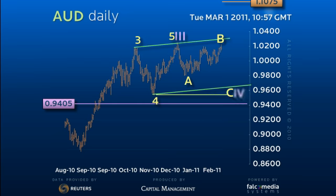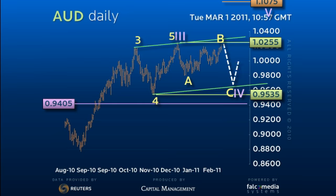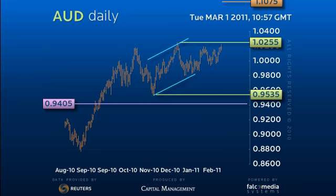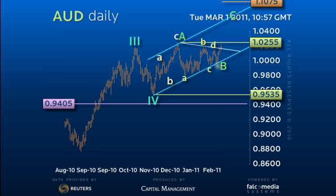Although it's easy to say 95.35 to 1.0255 corrective consolidation risking another drop before new highs, this is out of proportion with the uptrend. A better alternative is a rising wedge that started with a three-wave move to new highs of 1.0255. Everything since is part of a B-wave triangle that remains poised to break up to a short-term C equals A target of 1.0370.